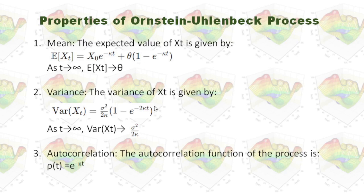Now let's take a look at the following properties of the Ornstein-Uhlenbeck process. First, the expected value of x(t) is given by this formula. When t approaches infinity, the time-dependent terms go to zero, so the expected value of x(t) becomes theta. That's why we say the long-term mean level is theta.